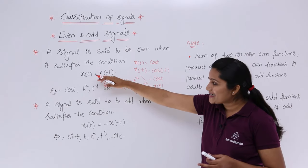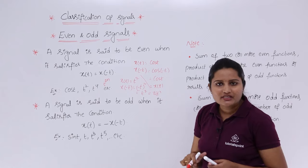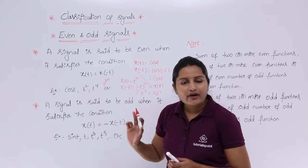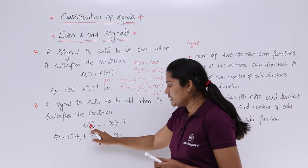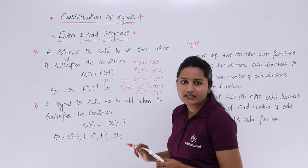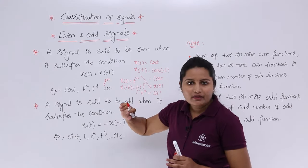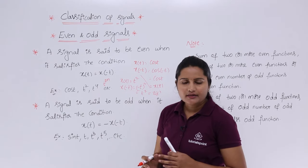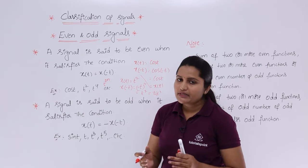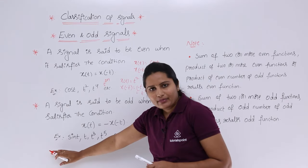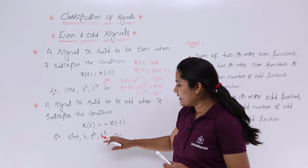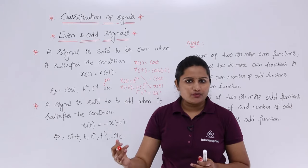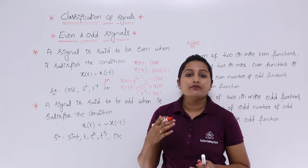Whatever signals satisfy this condition are said to be even signals. For an odd signal, a signal is said to be odd when it satisfies the condition x(t) = -x(-t). Here for example, we can take sin(t), t, t³ and all odd powers. You can consider t^(2n+1) — always t^(2n+1) will be an odd signal.